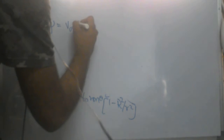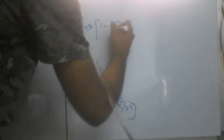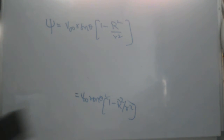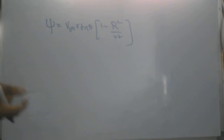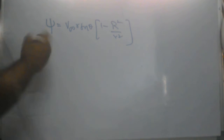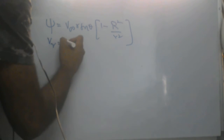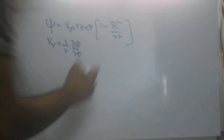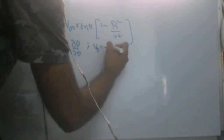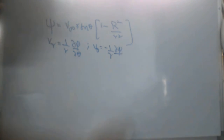The final result is psi equals V-infinity R sine theta times (1 minus capital R squared over small r squared). Now if this is my stream function for the flow field, I can get the velocity field by differentiating the stream function. In polar coordinates, Vr is given as (1/r) times d-psi/d-theta, and V-theta is given by minus d-psi/d-r.